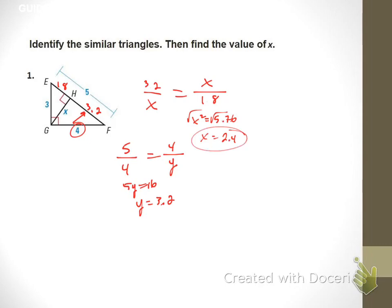So sometimes when you set up a proportion, you can't solve it. And so you've got to move on to the next proportion until you get one that you can.